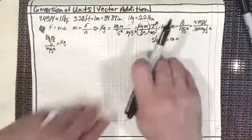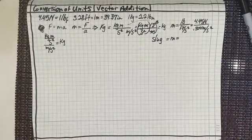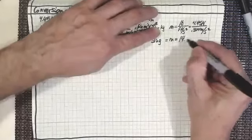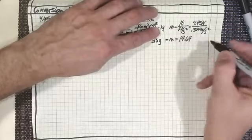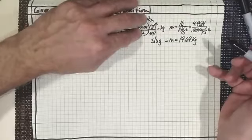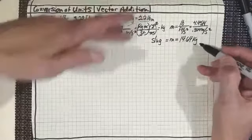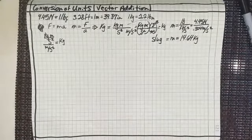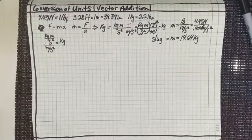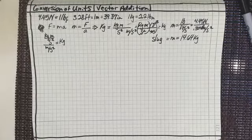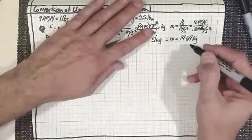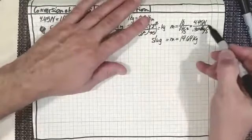It's a slug in the British gravitational system. Let's see how many kilograms that slug is: 4.45 divided by 0.3048 gives me 14.6. So a slug is 14.6 kilograms. Those are both masses.